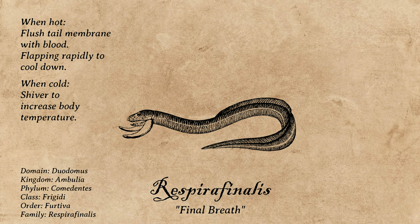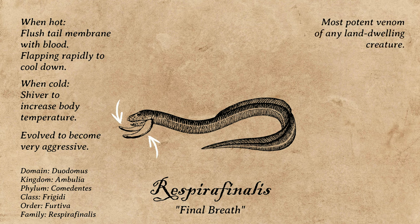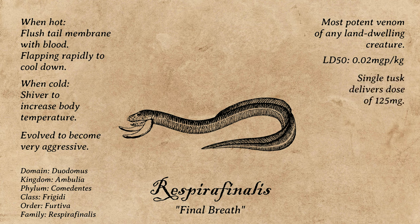In such extreme environments, they can't afford to let any meal go, and so have evolved to be very aggressive, with two external tusks laced with the most potent venom of any land-dwelling creature on the planet. The LD50 of Respira Phenalus venom is 0.02 milligrams per kilogram, and a single coated tusk delivers a dose up to 125 milligrams, though it always strikes with both at once.